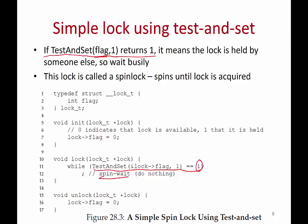You exit the while loop once a value of 0 is returned, meaning the flag was 0 and you set it to 1. When that happens, you were the thread that managed to set the flag from 0 to 1 — you have acquired the lock. Because this is one atomic instruction, nobody can interrupt you while test-and-set runs. This is a simple way to acquire a lock using an atomic instruction.